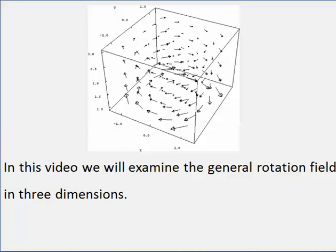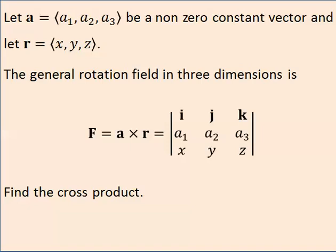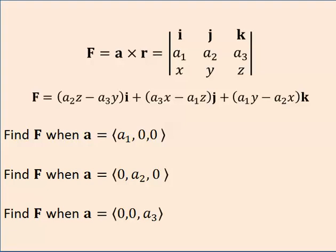The general rotation field in 3 dimensions starts with a constant vector A. Let A be a non-zero constant vector and let R be the radial vector field XYZ. The general rotation field in 3 dimensions is the cross product of A cross R. I went ahead and found the cross product for you. What I would like to do is give this cross product a little bit of meaning.